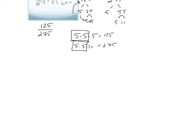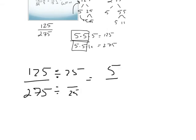So we're going to take 125 and divide that by 25, and then take 275 and divide that by 25. So I'm left with 5 over 11. That's how we simplify 125 and 275.